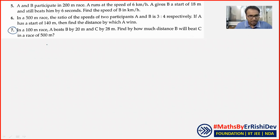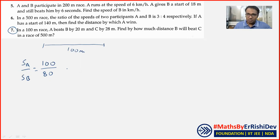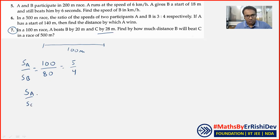آئیے دیکھتے ہیں — in a 100 meter race, A beats B by 20 meters. B is covering 20 meters less, so B covers 80 meters. Let's say B covers 72 meters — check کرتے ہیں۔